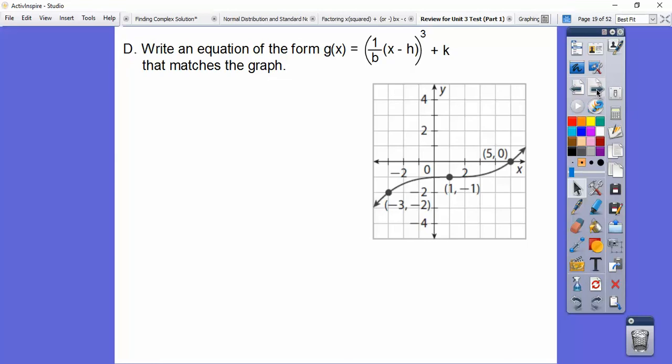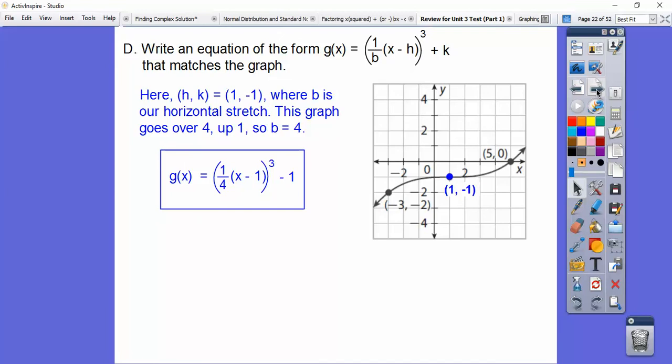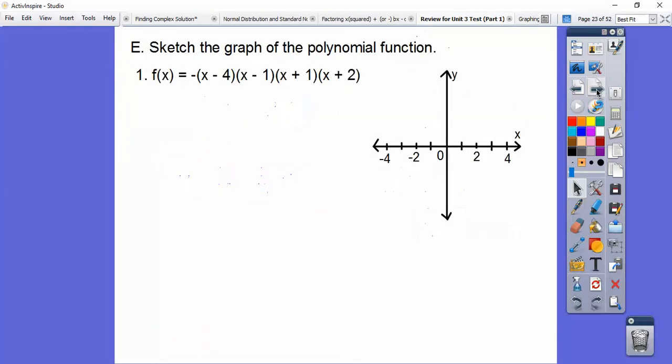Write an equation of this form. This is where we have a horizontal stretch. B is my horizontal stretch right there. So again, here's hk, 1, negative 1 right there, so we know that part. And then our regular graph went over 1, up 1. This one goes over 4, up 1, so our horizontal stretch is 4, so b is 4. We just plug everything in, and there's our equation right there.